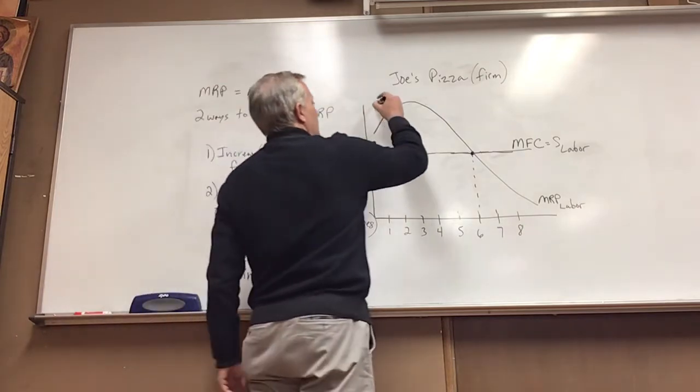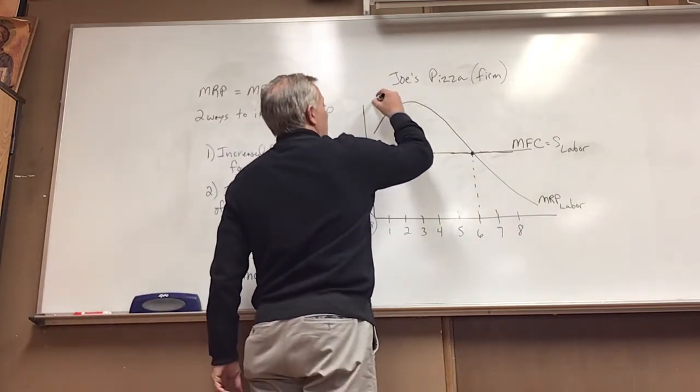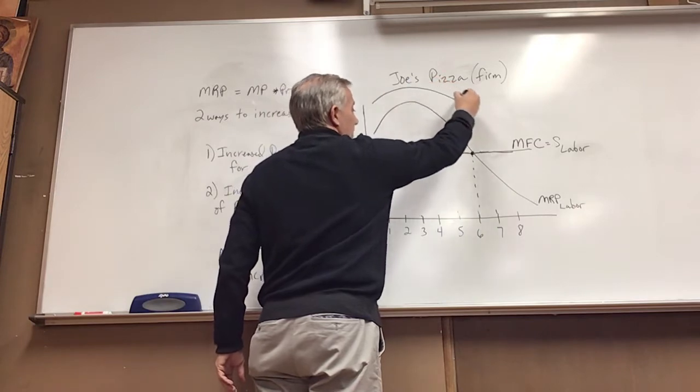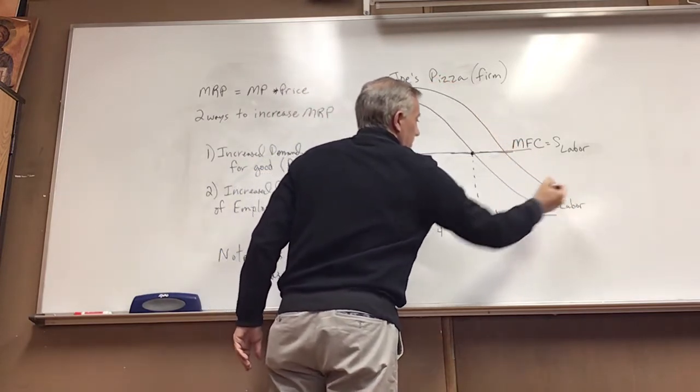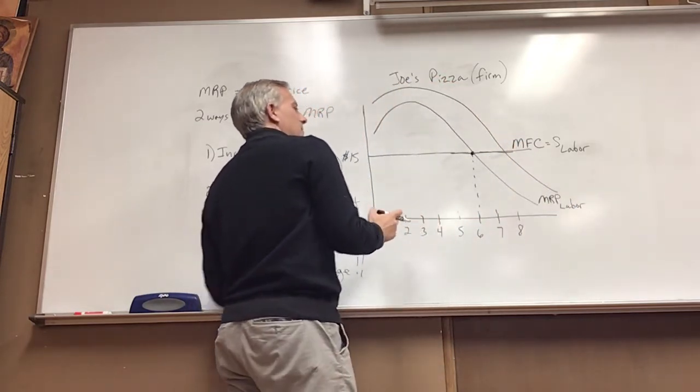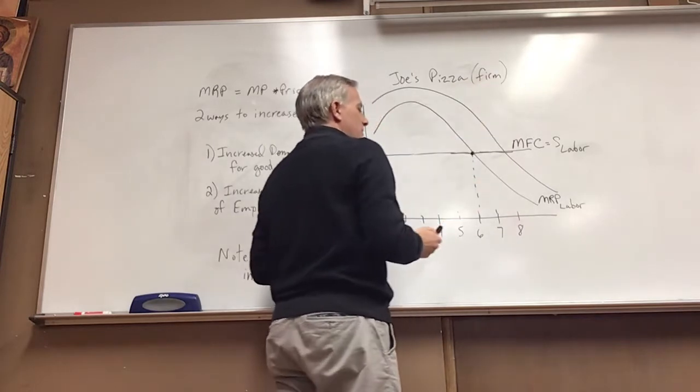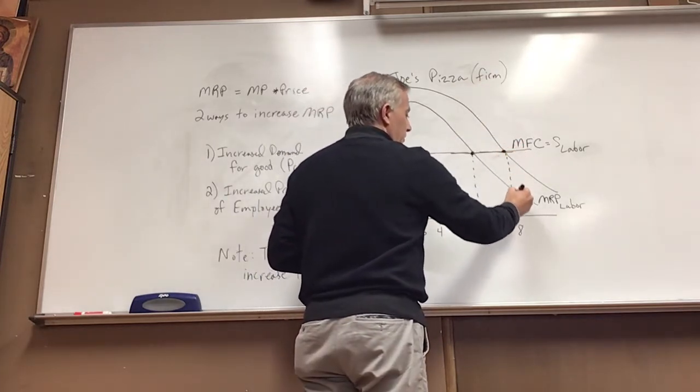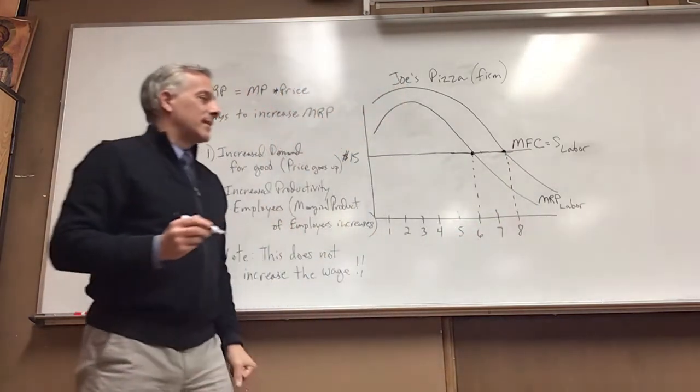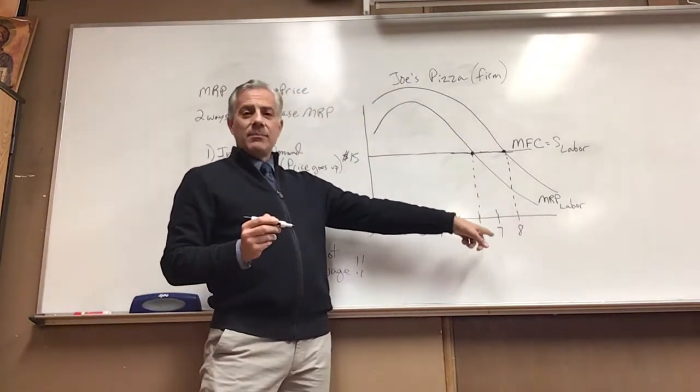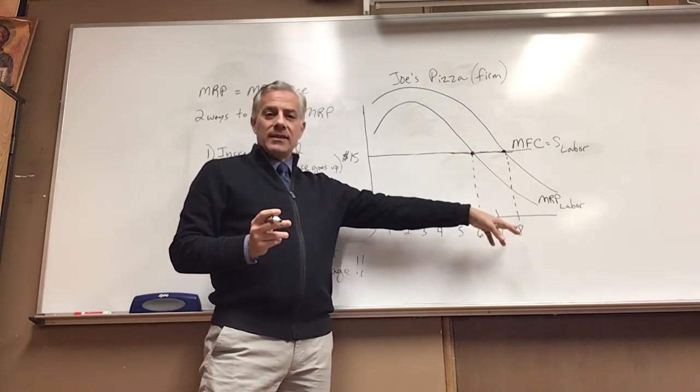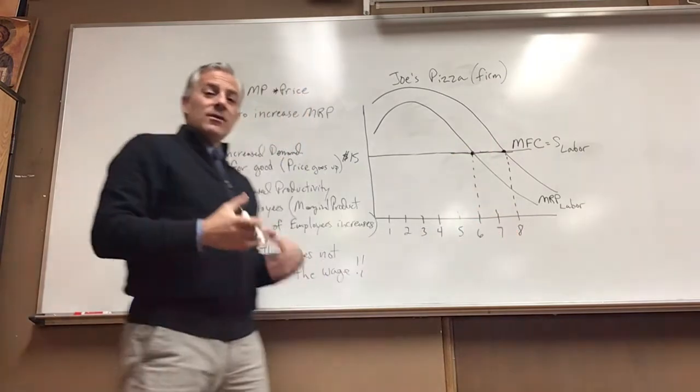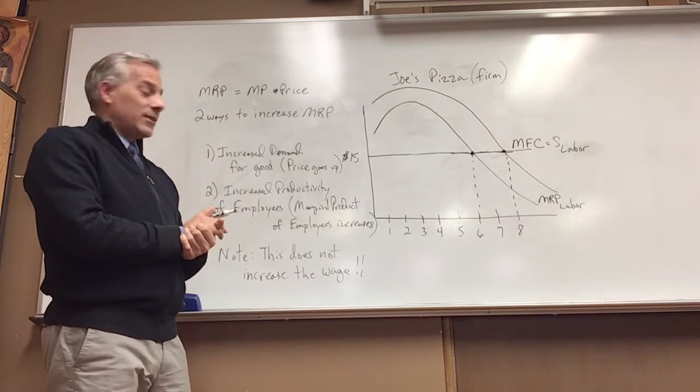So we're still at $15 but there is some good news and that good news is if our marginal revenue product increases like this, it's a lot like a demand curve shifting. Well what do we have? We have two more employees that we're hiring. We were hiring six employees, now we're hiring eight employees. So there's increased job security through this dynamic happening.